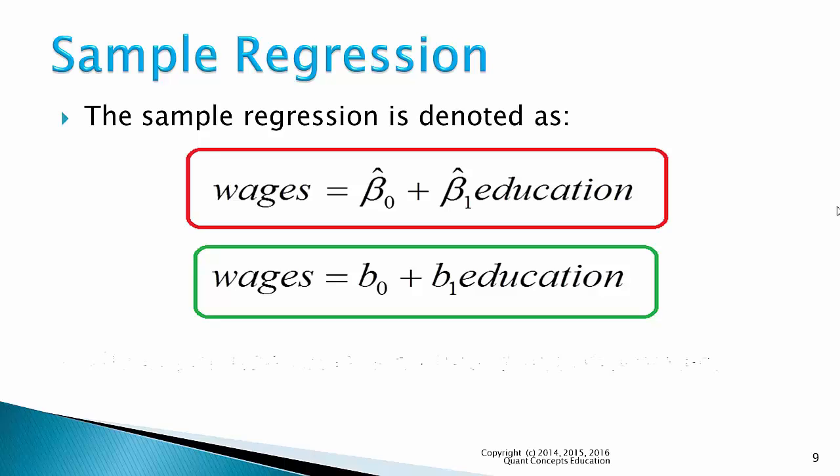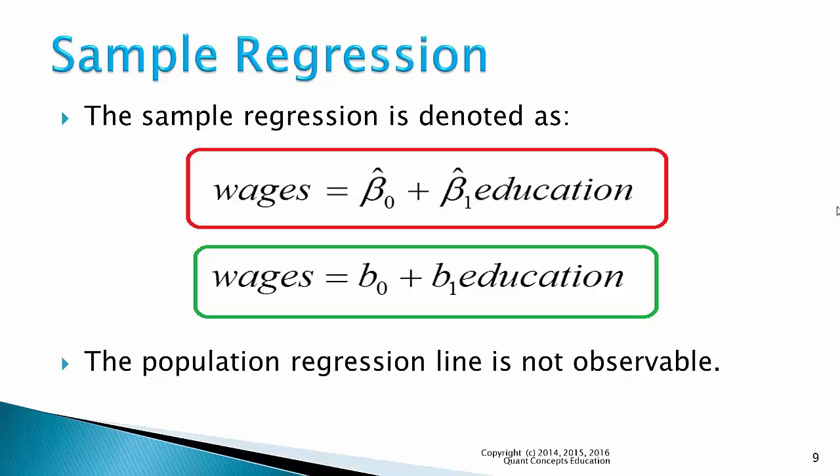The main thing to remember is that the population regression line is not observable, as we need all observations in the entire population to calculate it. However, the population regression line is a true relationship between your dependent and independent variables. And the sample regression line is observable, as we calculate it using our sample of observations. It's used as our estimate of the population regression line.